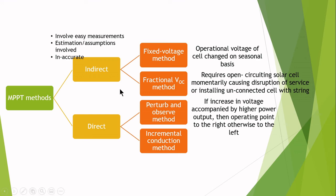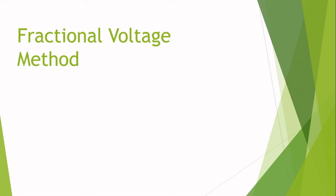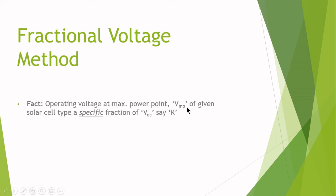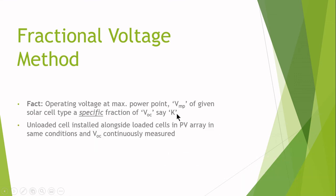Moving on to the fractional voltage method. The operating voltage at maximum power point VMP of a given cell type is a specific fraction of the open circuit voltage, which we name as K. An unloaded cell is installed alongside the loaded cell in the same condition and the open circuit voltage is continuously measured. The operating voltage is set according to the law that the operational voltage equals K times VOC, where K comes from the non-loaded solar cell.